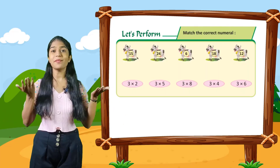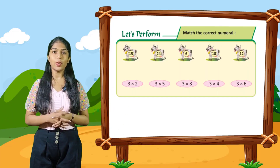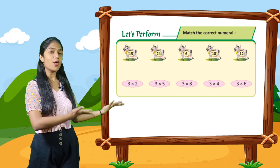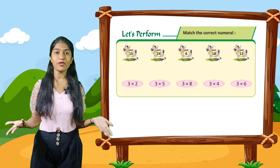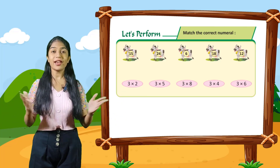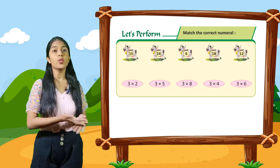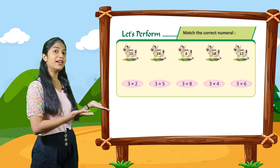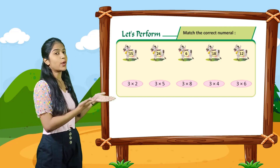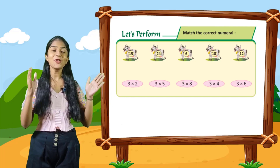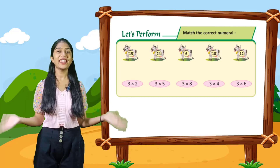So kids, now let's perform. You have to match the correct numeral. So kids, here are some cows given to you with numbers and you have to match the right number. For example, the first cow has number 15, so 3 into 5 is equal to 15. You have to match this cow with the correct number.